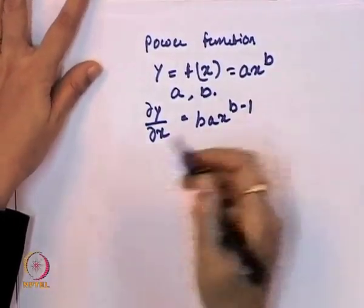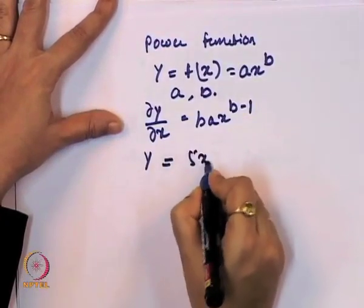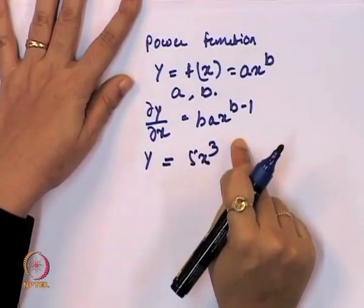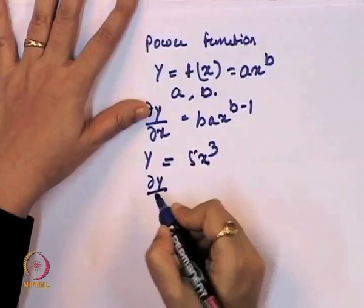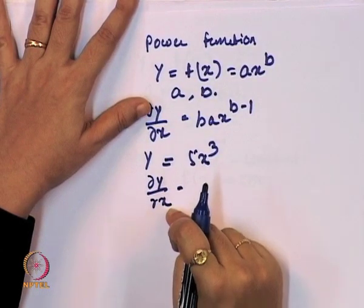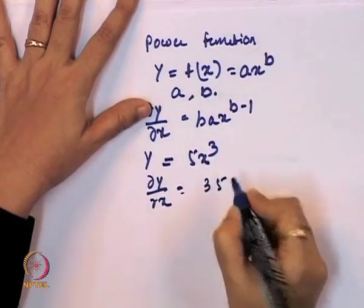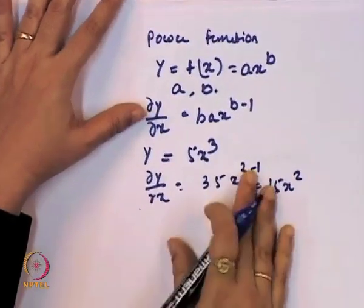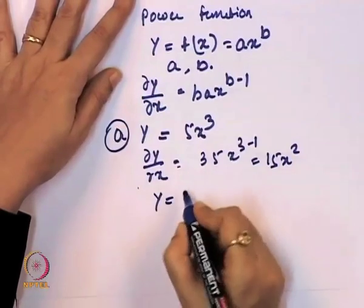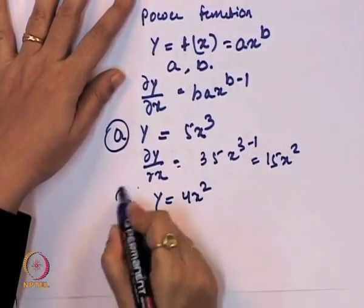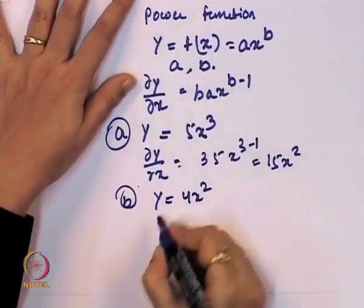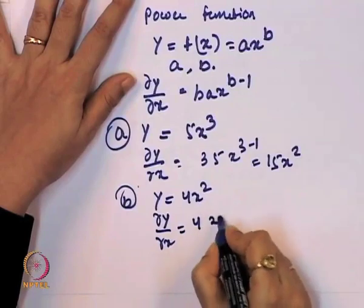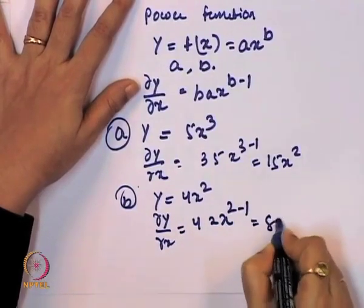Let us give a number to this functional form. Suppose y = 5x³. Then del y / del x = 3·5·x^(3−1) = 15x². Similarly, take y = 4x². Then del y / del x = 2·4·x^(2−1) = 8x.